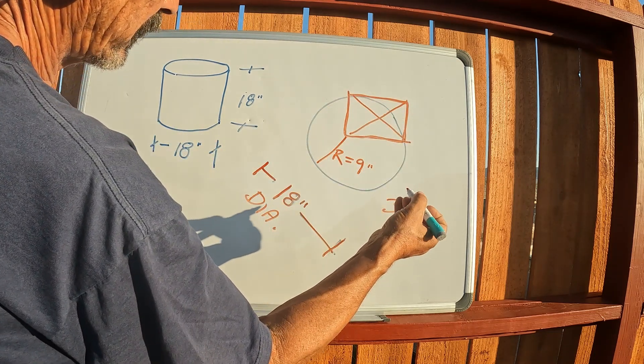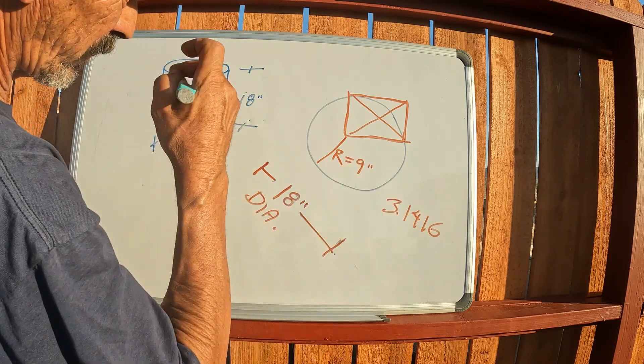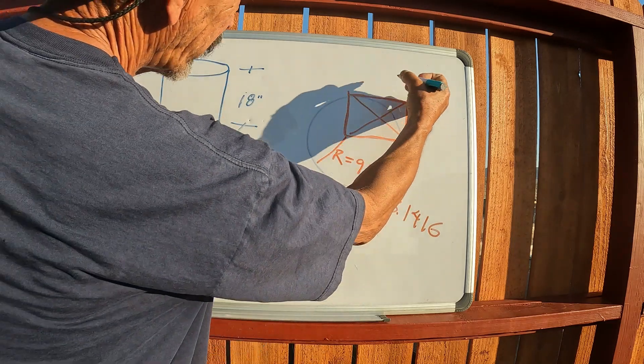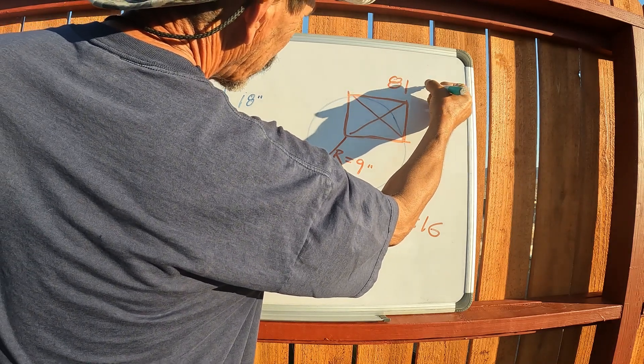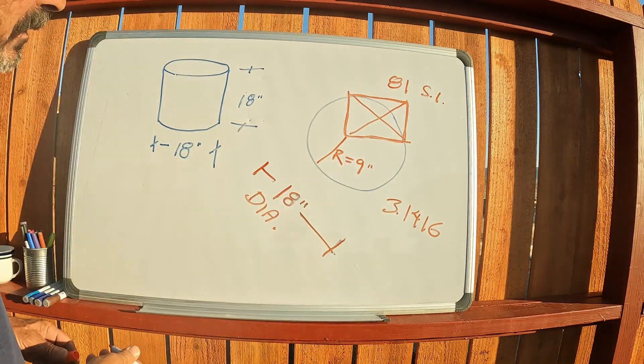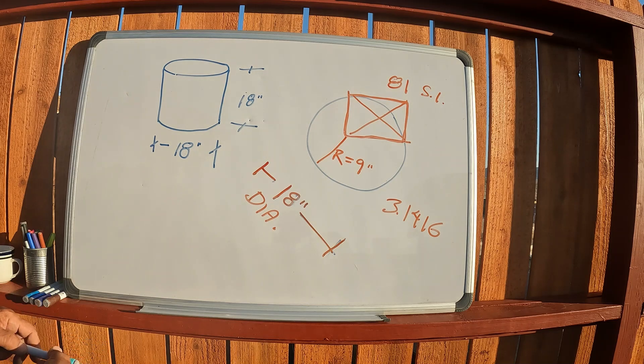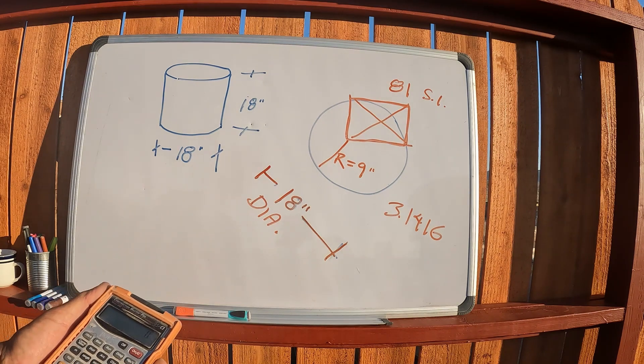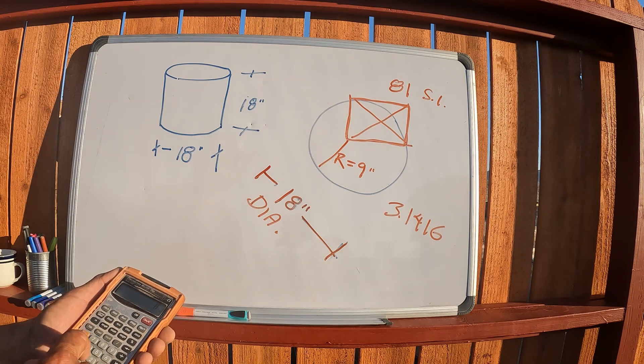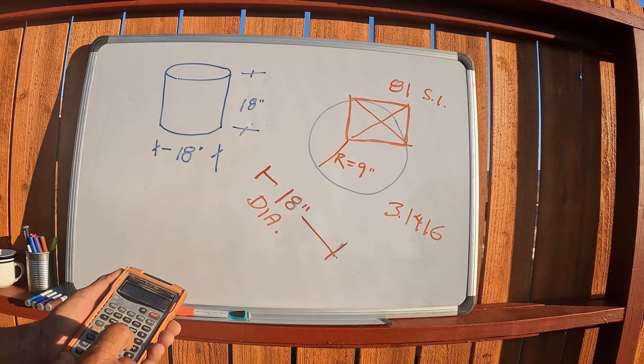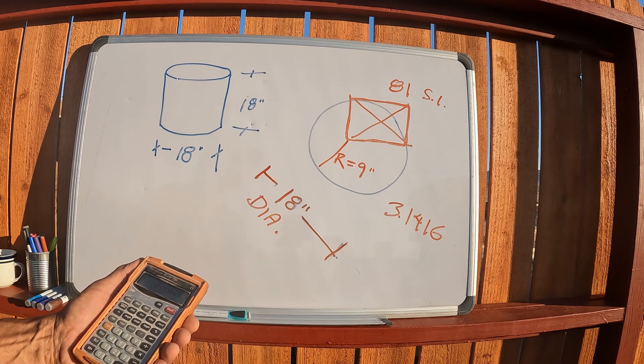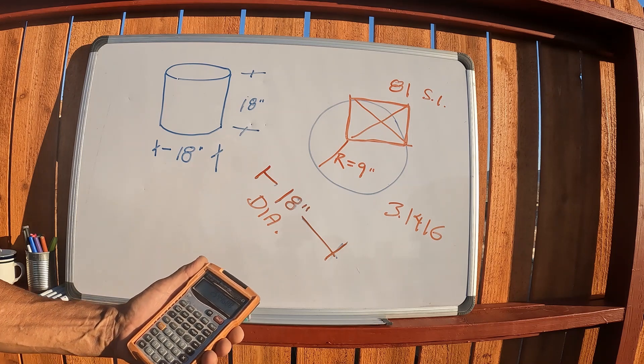I'm not explaining this exactly like a teacher would, but anyways 9 times 9, that's 81 square inches in this case. Then you take that and multiply it by pi, so 81 times 3.14159 equals 254 square inches.